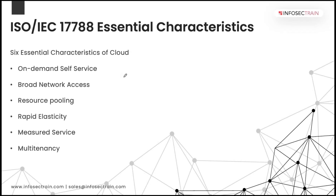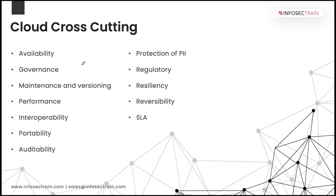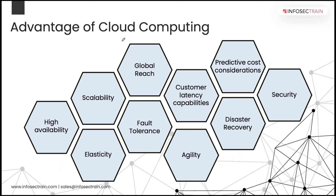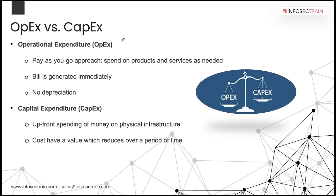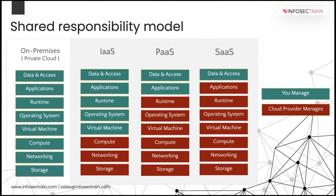Then ISO/IEC 17788 defined your cloud, and moving ahead we were talking about IaaS, PaaS, and the different kinds of services defined. We talked about how you will select your cloud service provider — on which criteria you will manage or judge them. We talked about public cloud, private cloud, hybrid cloud, community cloud, comparing their advantages, OpEx, CapEx, infrastructure as a service, platform as a service, software as a service. Towards the end, we were talking about the shared responsibility model.